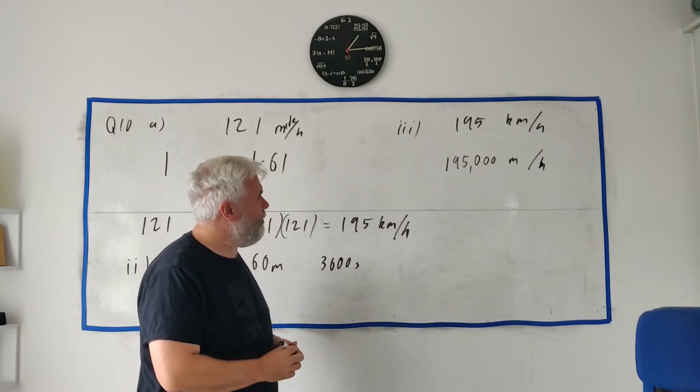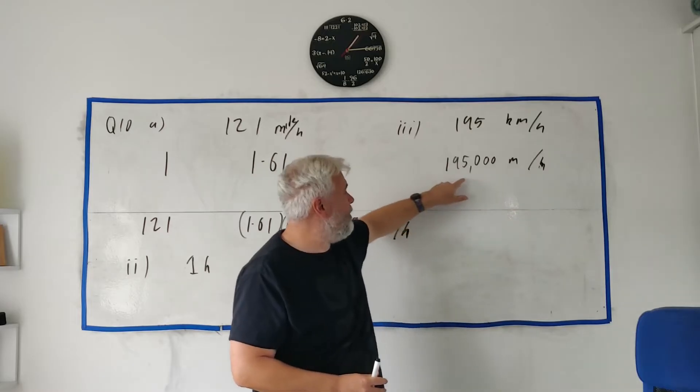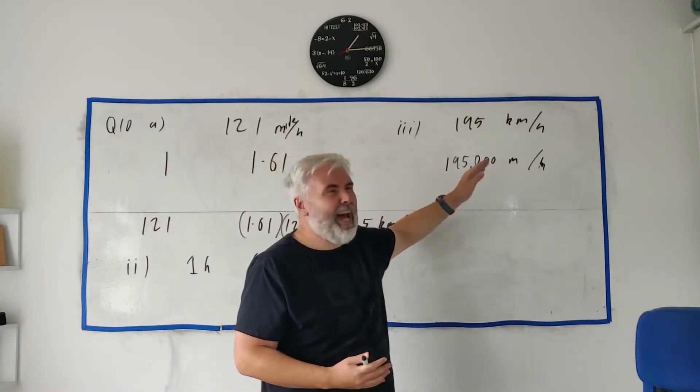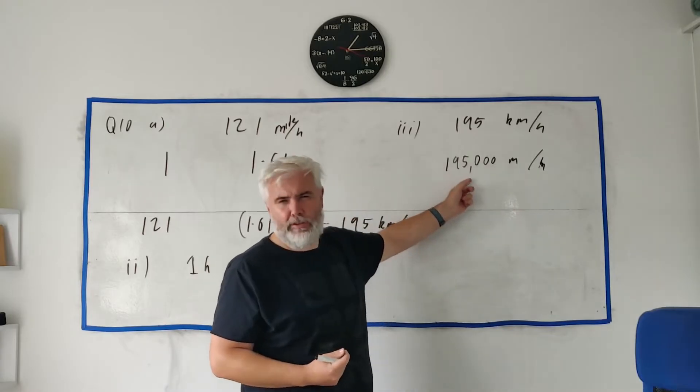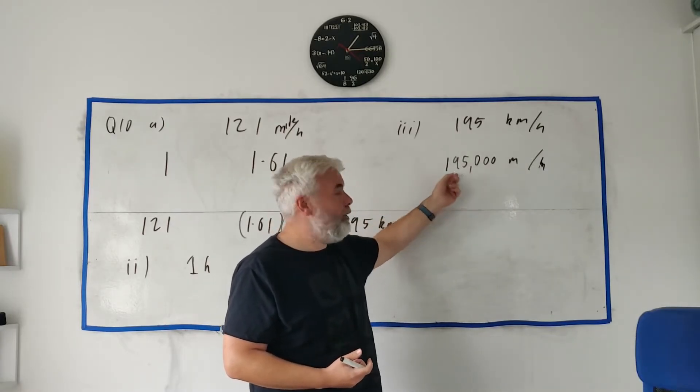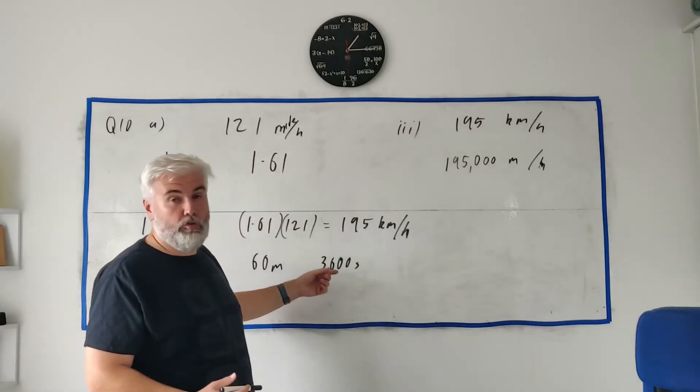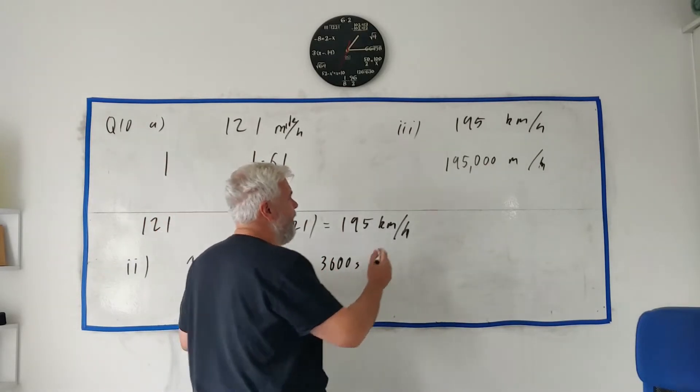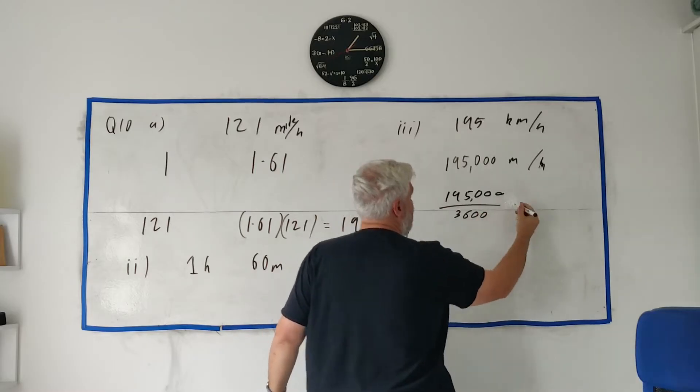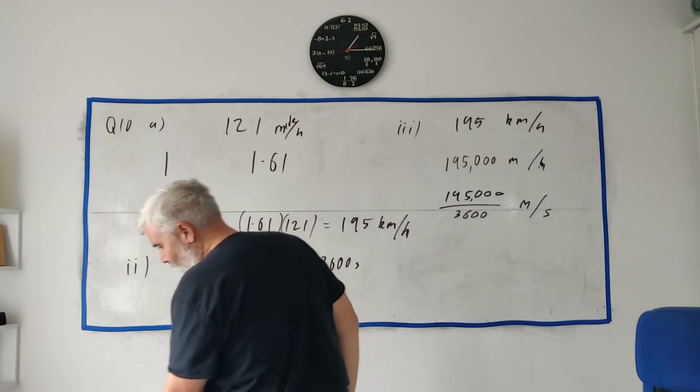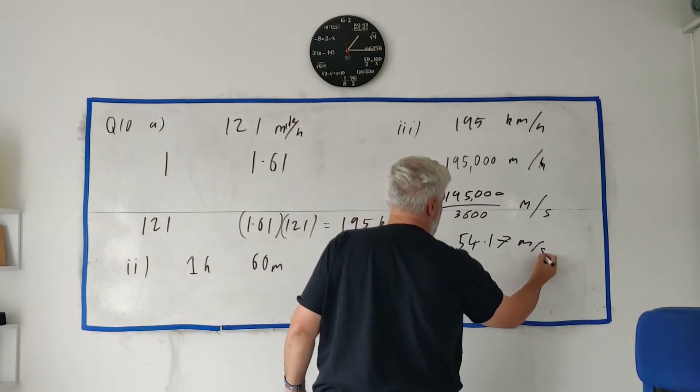So meters per hour, this is how many meters it would travel in one hour. What about half an hour? In less time, if I made the time smaller, which I want to make it into seconds, would this get bigger or smaller? In half the time it would travel half the distance. In one thousandth the time it would travel one thousandth the distance. In one 3600th the time, this number divided by 3600, and that gives us meters per second. If you put that into a calculator you get 54.17 meters per second, and that's rounded to two decimal places.